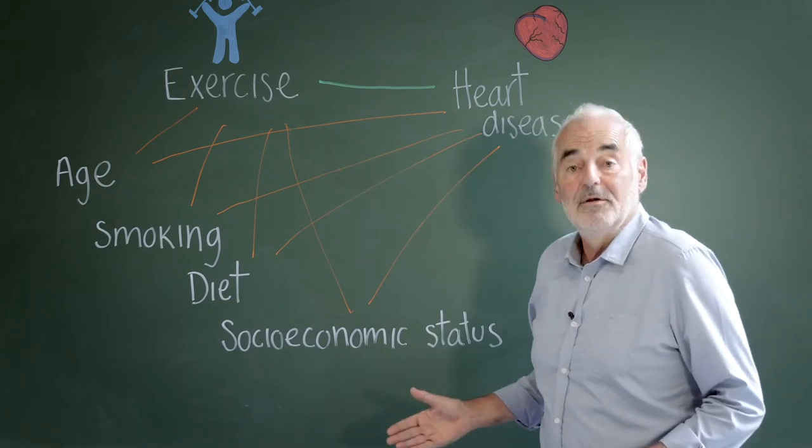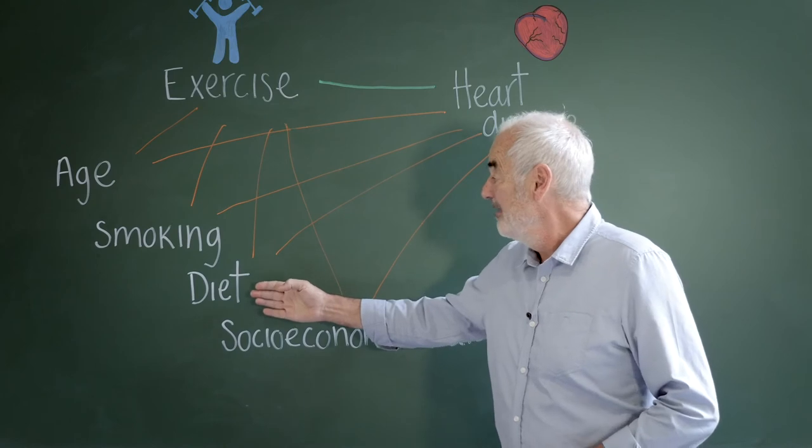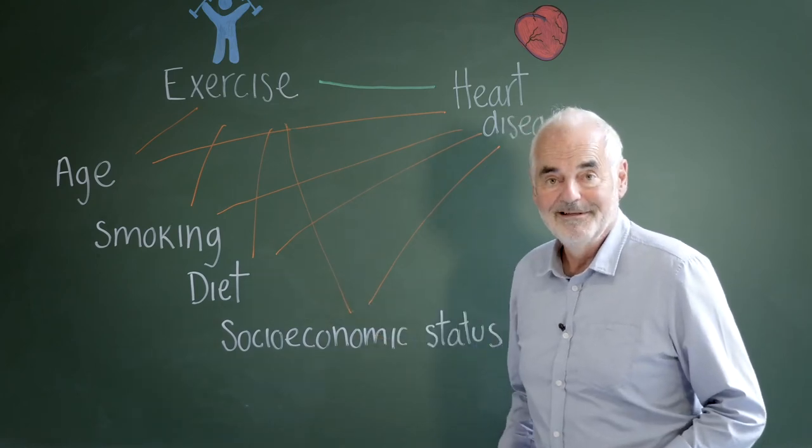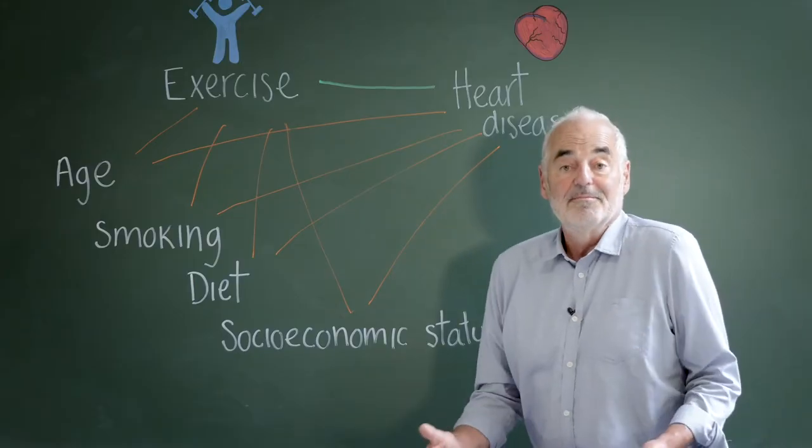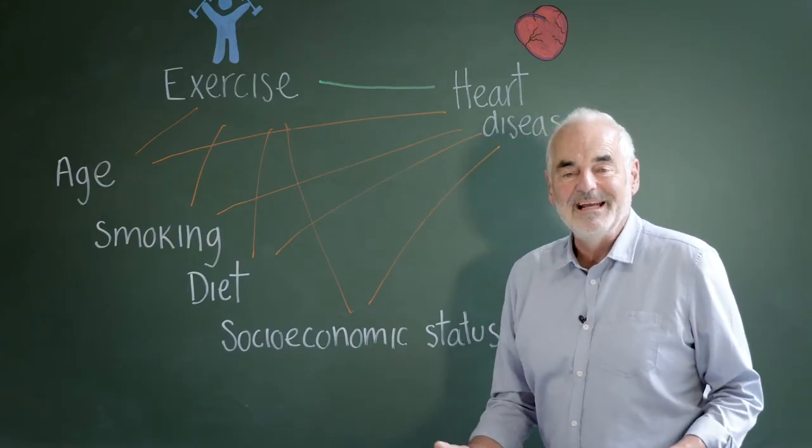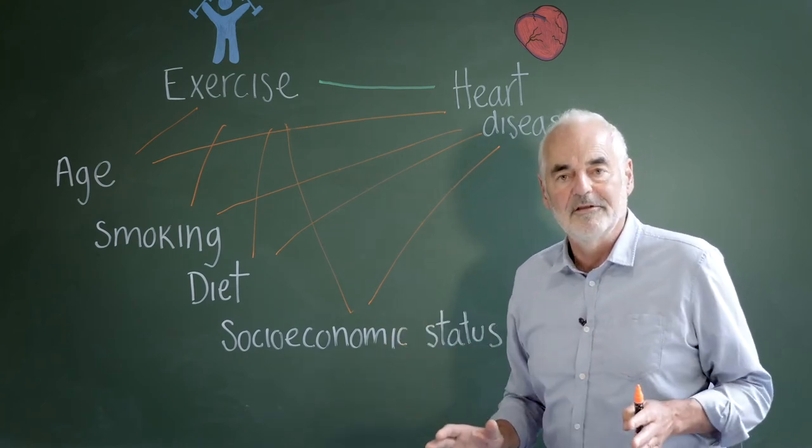Also there may be confounders that are measured imprecisely. We can ask people what they eat but it may not be very accurate. And then there may be measures like socioeconomic status that are very precise categories but in fact are very rough summaries of a much vaguer idea of social circumstances.